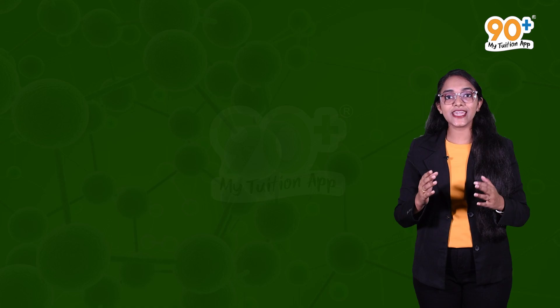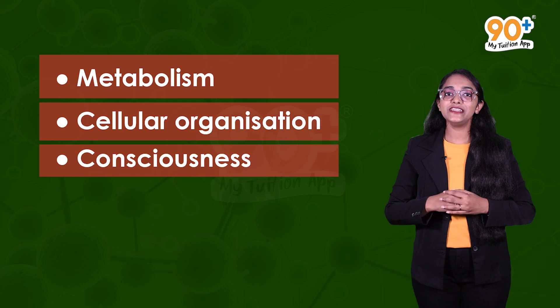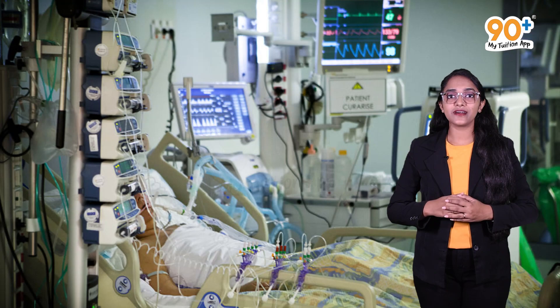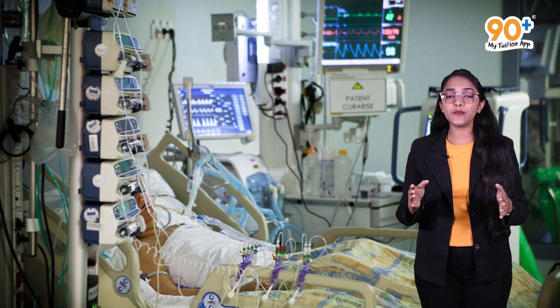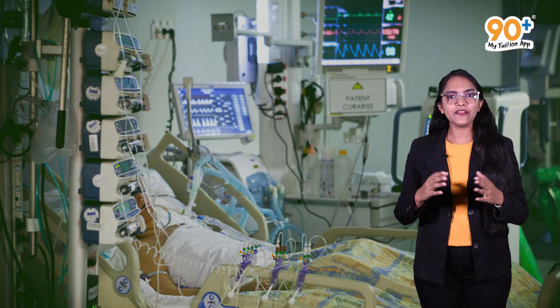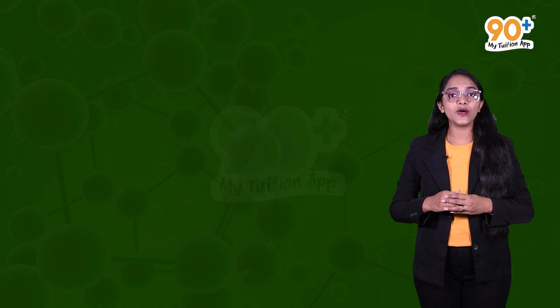So consciousness is one of the defining characteristics of the living world. We can conclude that metabolism, cellular organization, and consciousness are the three major defining characteristics of the living world. Consider people who are living with the help of machines that support their heart and lungs — they are in a coma and don't respond to their environment, yet they are physically living. They have negligible consciousness, and are socially, mentally, and behaviorally dead.